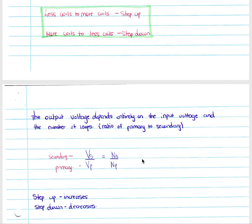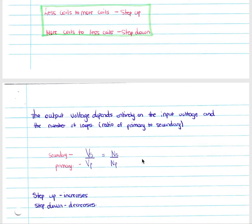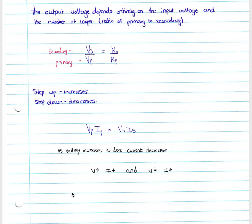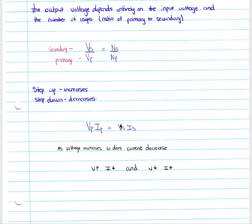The output voltage depends entirely on the input voltage and the number of loops. We have a ratio from our primary to our secondary coil, given on your formula sheet: the voltage of your secondary over the voltage of your primary equals the number of coils on your secondary over the number of coils on your primary. A step up increases your voltage and a step down decreases your voltage.